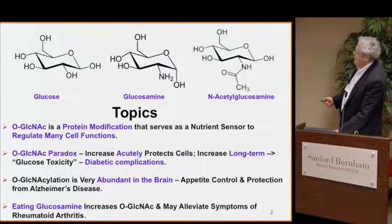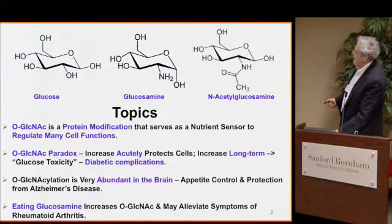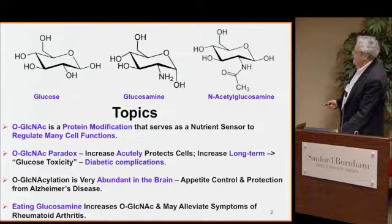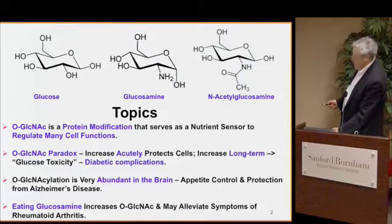I'm going to talk about the paradox we call the O-GlcNAc paradox, because in the short term, when you increase GlcNAcylation of proteins, it's actually very beneficial to cells. But in the long term, it's the major mechanism we think now of why glucose is so toxic when it gets up to high levels. Then I want to talk about its abundance in the brain, where it's important in both appetite control and also in protecting neurons from neurodegeneration. And at the end, because of the nature of this session, I thought I would say a little bit about eating glucosamine, which is a nutraceutical in the United States and is actually a prescription drug in most countries.